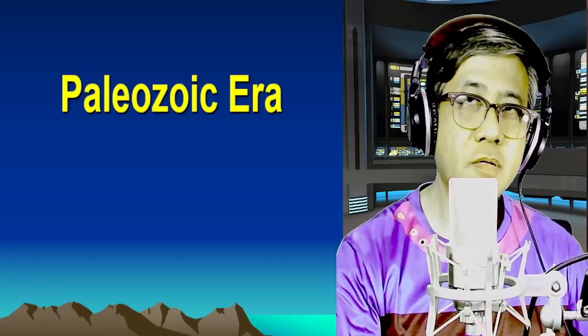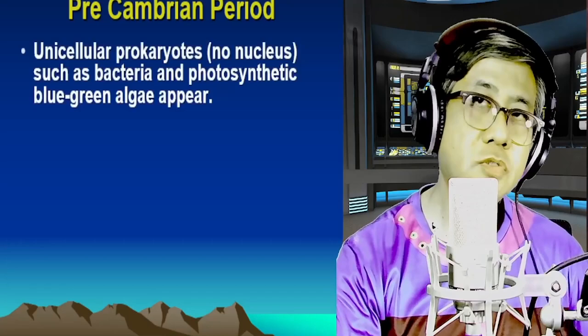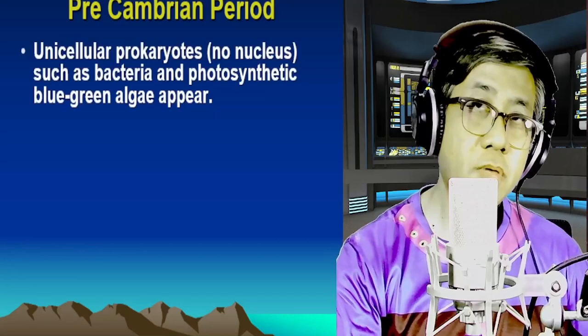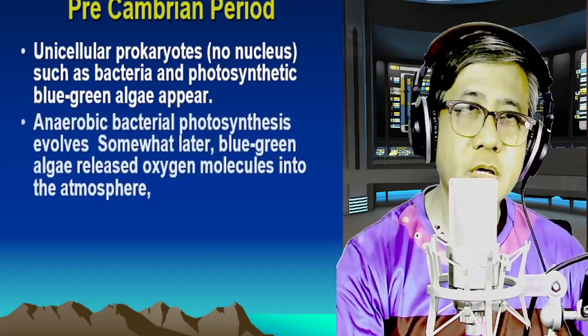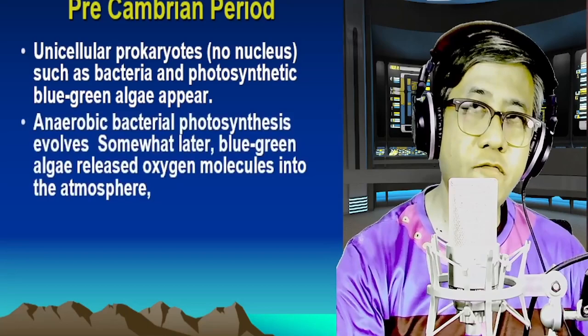Starting with the Paleozoic era, the first period is the Precambrian. During the Precambrian period, we saw the evolution of the first living cell — the anaerobic bacteria, or prokaryotes. These prokaryotes have no nucleus and no membrane-bound organelles. Eventually, after millions of years, the first photosynthetic blue-green algae — the anaerobic cyanobacteria — appeared and underwent photosynthesis for the first time.